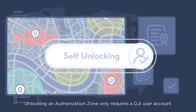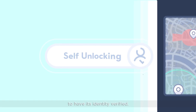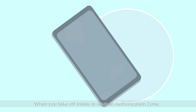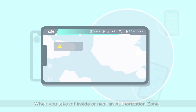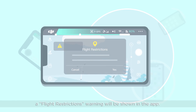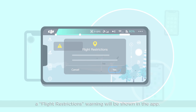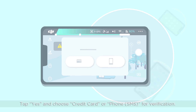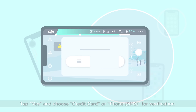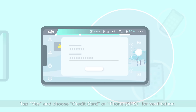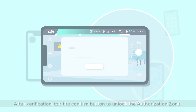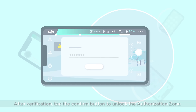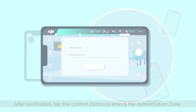Unlocking an authorization zone only requires a DJI user account to have its identity verified. When you take off inside or near an authorization zone, a flight restrictions warning will be shown in the app. Tap Yes and choose credit card or phone SMS for verification. After verification, tap the Confirm button to unlock the authorization zone.